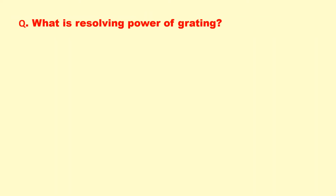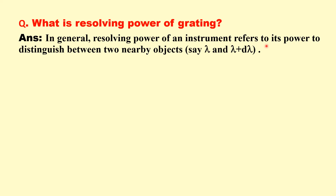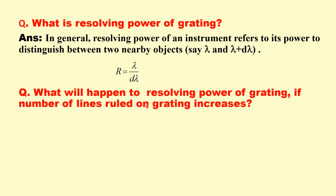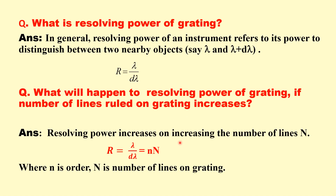What is the resolving power of a grating? The resolving power of an instrument is its ability to distinguish between two nearby wavelengths. If λ and λ + dλ are two wavelengths, then resolving power R = λ / dλ. What happens to resolving power if the number of lines on the grating increases? Resolving power increases because R = nN, where n is the order of diffraction and N is the number of lines. So increasing N increases the resolving power.